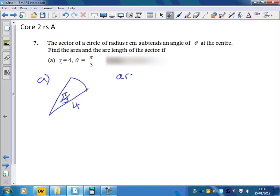The formula for the arc length is r times theta, as long as theta is in radians. So in this case, I've got 4 times pi over 3, which put into your calculator gives you 4.19 centimeters. For the area, we have the formula a half r squared theta, because theta is in radians.